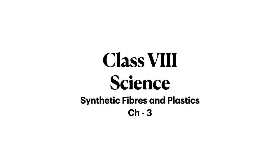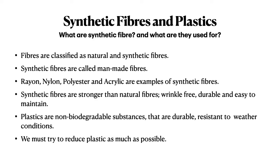The chapter name is Synthetic Fibers and Plastics — the third chapter of this subject. Fibers are the basic building material for shirts, towels, clothes, and woolen dresses. Fibers are classified into two types: natural fibers and synthetic fibers. Natural fibers occur naturally — examples are cotton, wool, and silk. Synthetic fibers are man-made and not naturally occurring. Common examples are rayon, nylon, polyester, and acrylic.